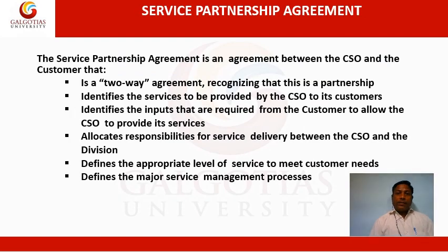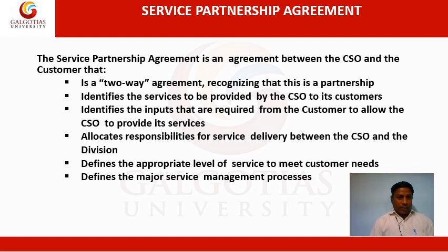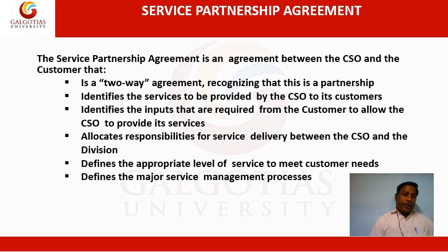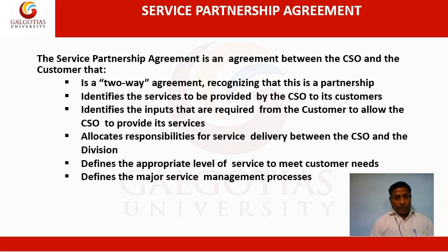The next is service partnership agreement — an agreement between CSO and customer. It is a two-way agreement recognizing this as a partnership. It identifies the services to be provided by the CSO to its customers, and identifies the inputs required from the customers to allow the CSO to provide the services — for example, asking for customer identity, registration number, date, name, and related information to verify the right customer is approaching. It allocates the responsibilities for service delivery between the CSO and the customer.